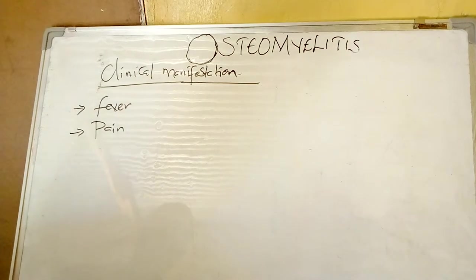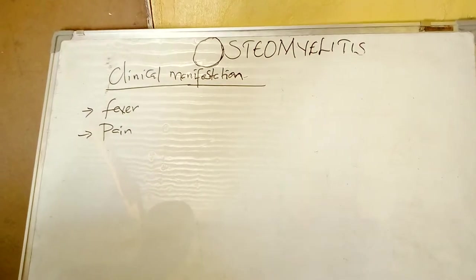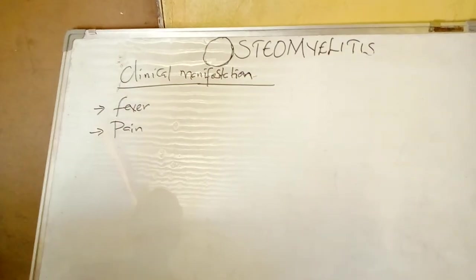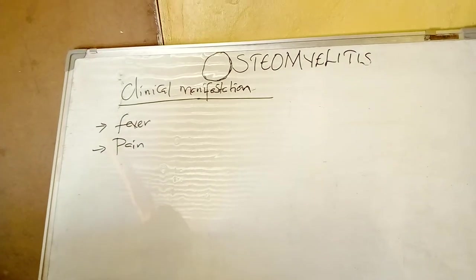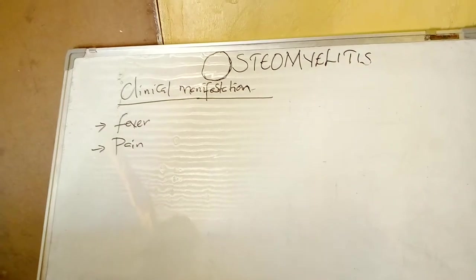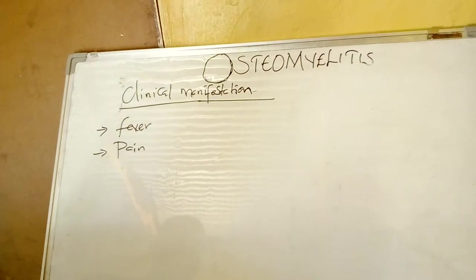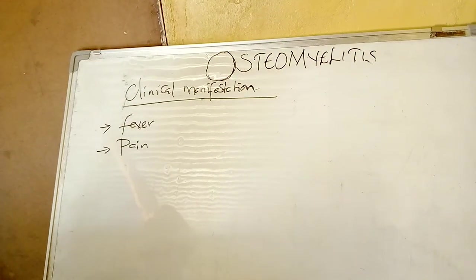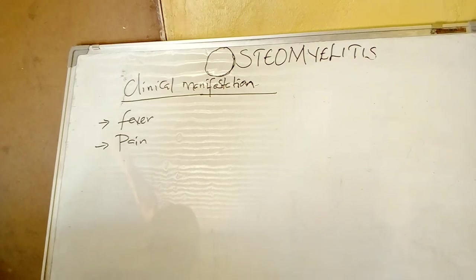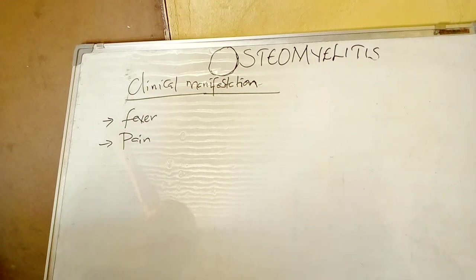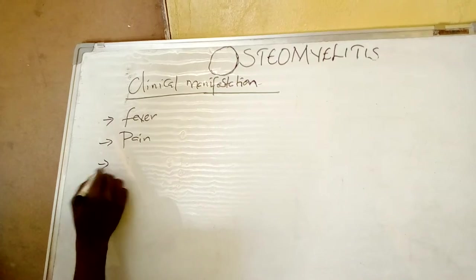There will also be pain. Pain will come as a result of compression of nerves in the Haversian canal. The Haversian canal has nerves running through it, so as a result of that nerve compression, the patient is going to have pain at the site of infection.